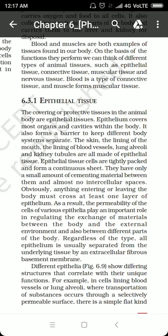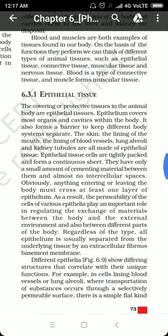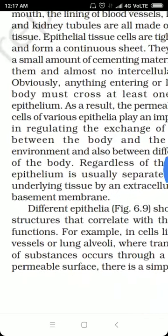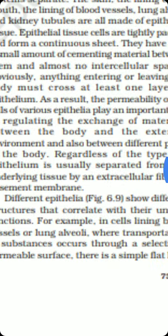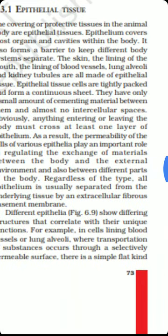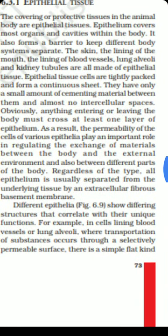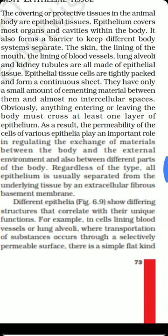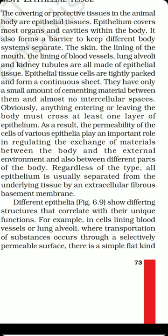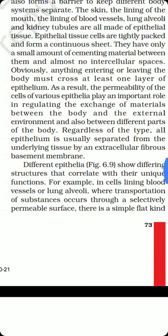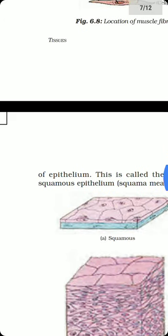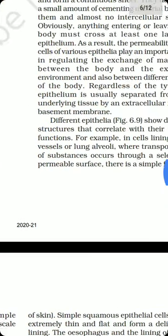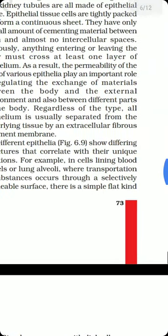Different epithelia show differing structures that correlate with their unique functions. For example, in cells lining blood vessels or the lung alveoli — where transportation of substances occurs across a selectively permeable surface — there is a simple kind of epithelium.